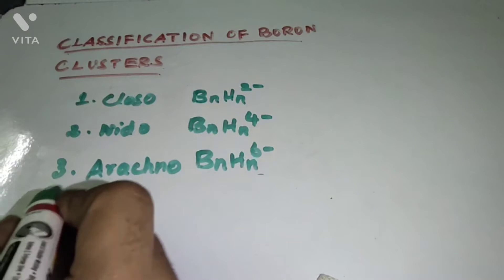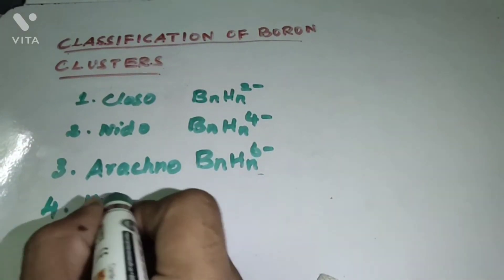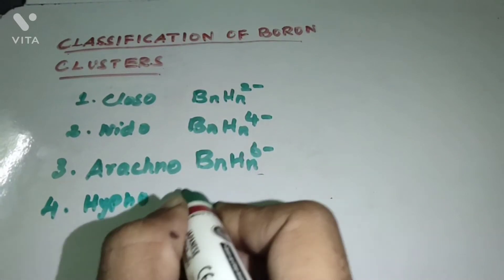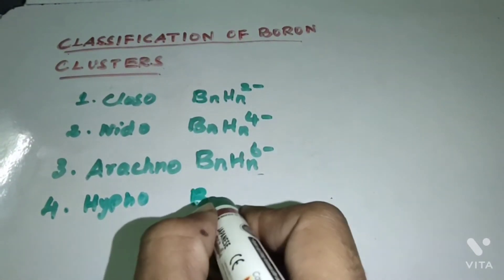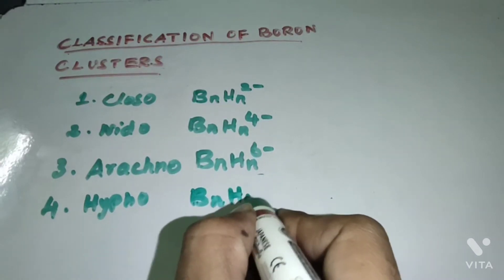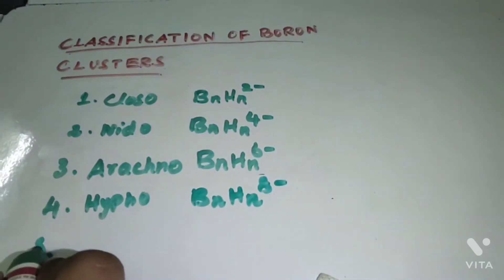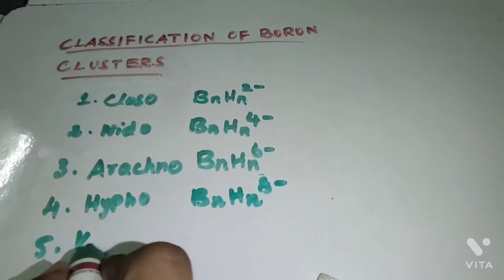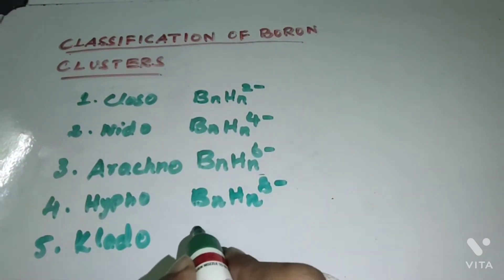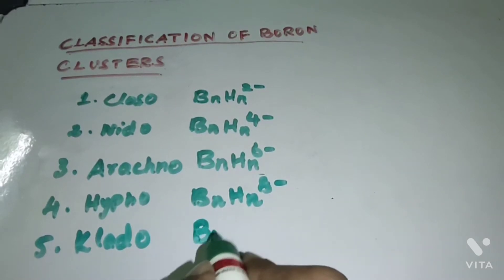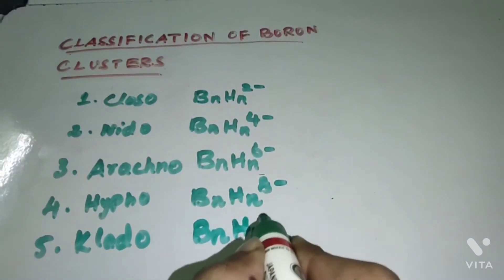The fourth one is Hypo. The general formula of the Hypo cluster is BnHn⁸⁻. Finally, Clado. The general formula of the Clado cluster is BnHn¹⁰⁻.